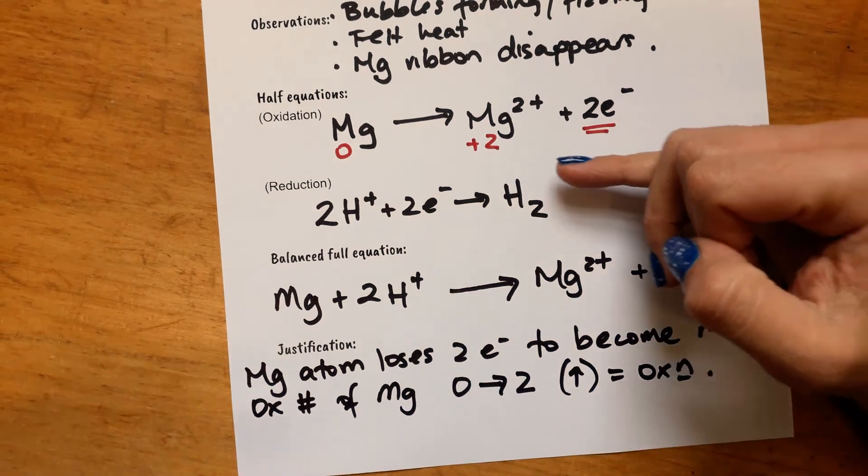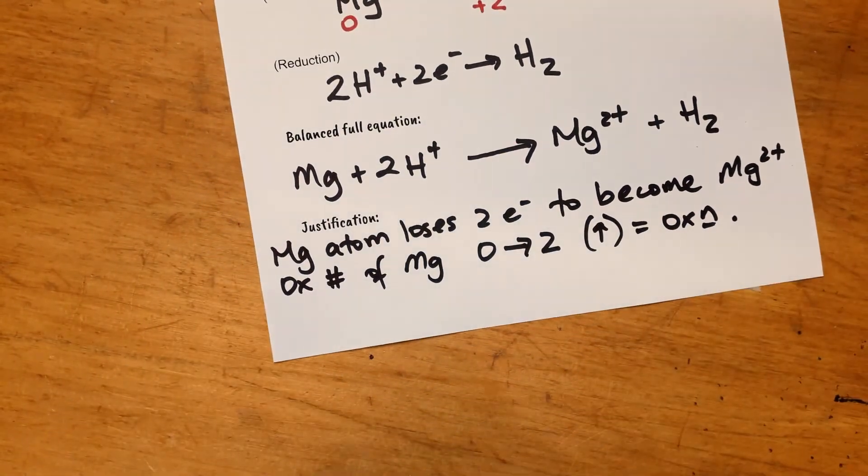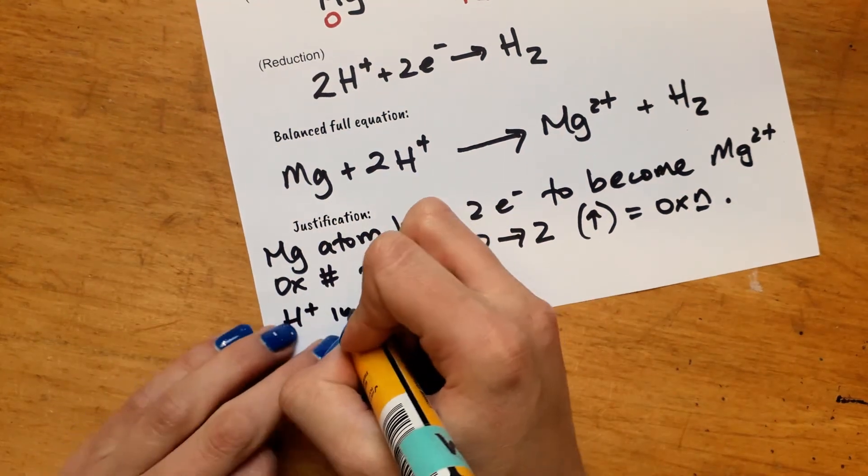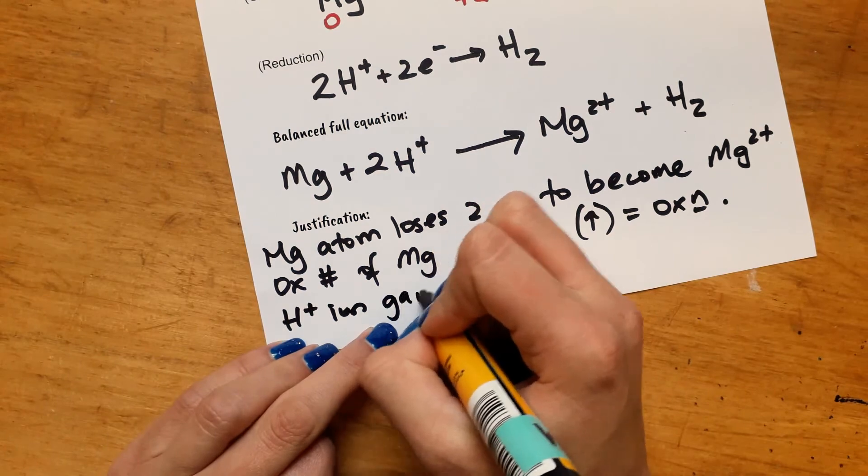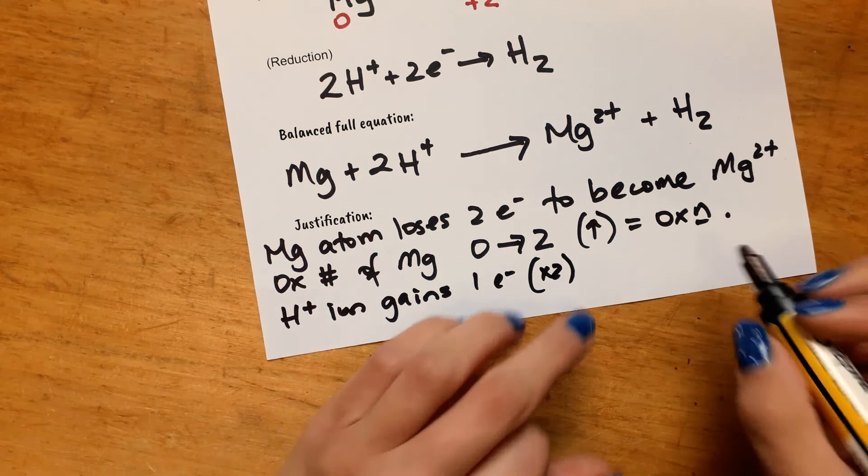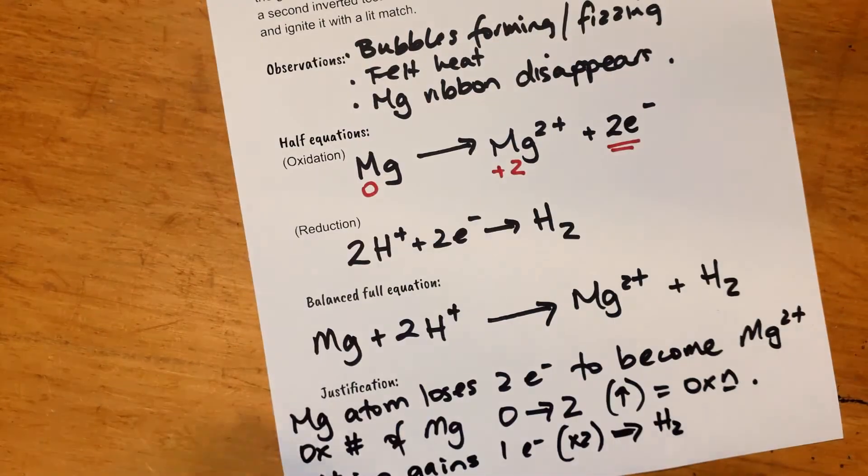Okay, so H⁺ ion gains one electron. That happens twice. And that's how you can get H₂. Or you could look at the oxidation number.